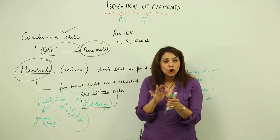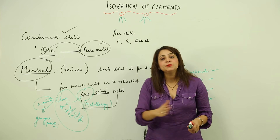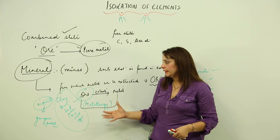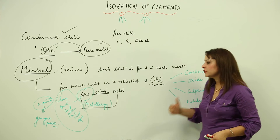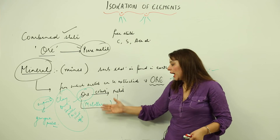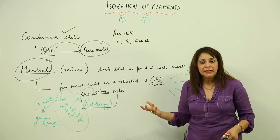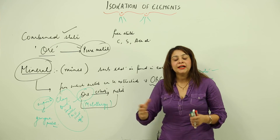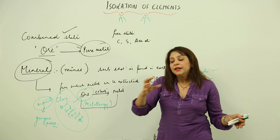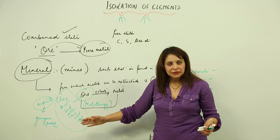To recap: all minerals are not ores. Only that mineral from which you can extract a certain metal is said to be an ore. Metallurgy consists of a number of steps, and after carrying them out you are capable of converting the raw form of metal into a ready-to-use form.